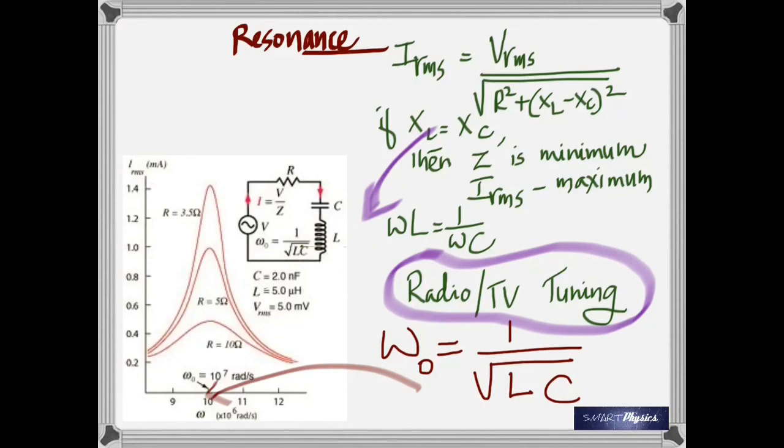If you look at those three numbers given there: if the capacitance is 2 nanofarad and inductance is 5 microhenry, then the resonant frequency is going to be 10^7 radians per second. That's the resonant frequency where the current becomes maximum. You can easily calculate that, and with that we have come to almost the end of LCR.